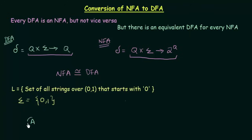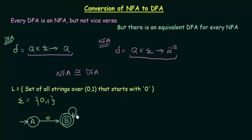We have a starting state A. A on getting input 0 goes to the next state B. Since the condition is that the string should start with 0, B is the final accepting state. In state B, whatever input we get — 0 or 1 — it stays in B itself. A on getting input 1 goes nowhere; it goes to phi, the dead configuration. Since this transition is not mentioned, it is an NFA.